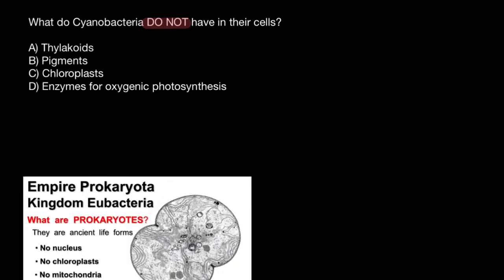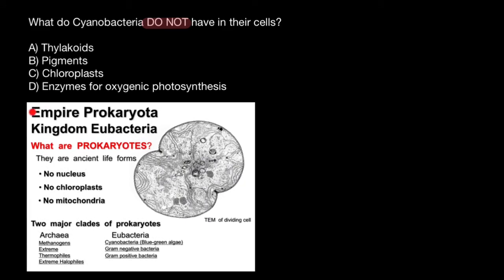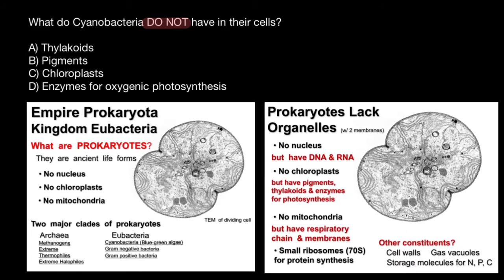First of all, I want to show you this picture. So, empire Prokaryota, kingdom Eubacteria or true bacteria. What are prokaryotes? They are an ancient form of life. They don't have a nucleus, no chloroplasts, no mitochondria. We can divide them into two classes: archaea and eubacteria. Cyanobacteria, or blue-green algae, is one of them. Those prokaryotes and cyanobacteria lack organelles and don't have a nucleus, but still have DNA or RNA.